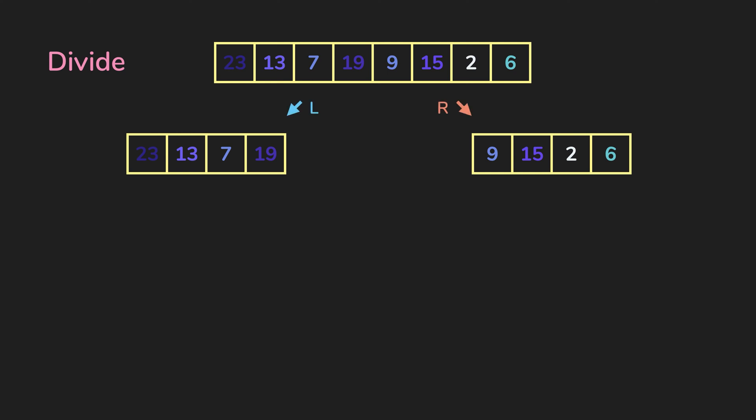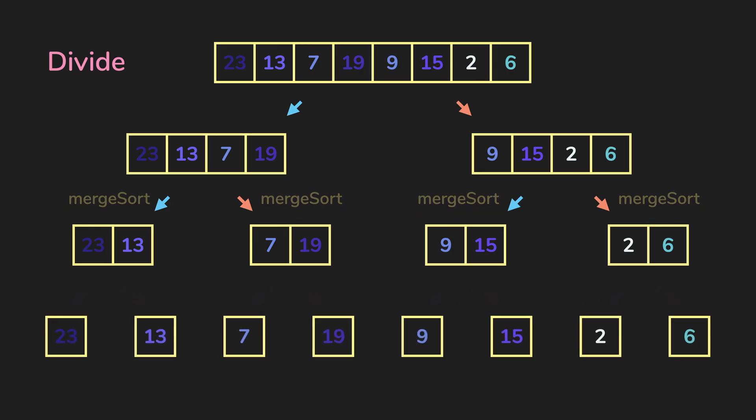You call merge sort on the left array and the right array. For each of those arrays, we'll again divide the array into a left and a right array since we're calling merge sort on them. And then again, up until there is only one element left.